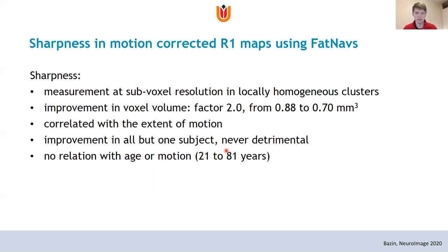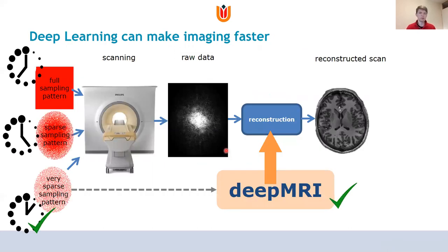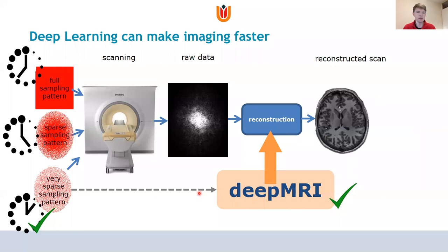Now that we have our multimodal sequence and motion-corrected data, we can move on to the third part: considering the measurement time and looking for ways to reduce imaging time. We need to consider the entire chain of data acquisition and reconstruction, where we usually start with reconstructed images and then proceed by post-processing them. We now consider the entire chain from the sampling pattern to raw data obtained and reconstructed, going from full sampling patterns to sparse or even very highly sparse sampling patterns that lead to a reduction in scanning time.